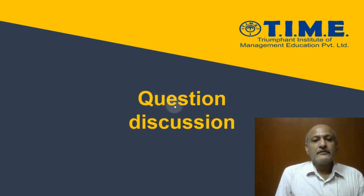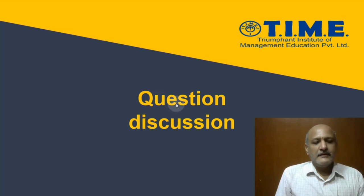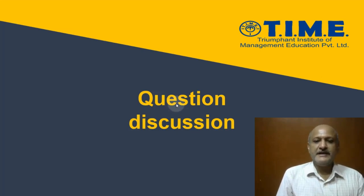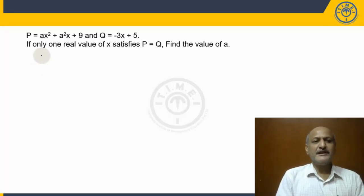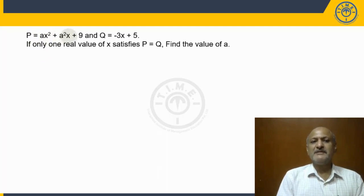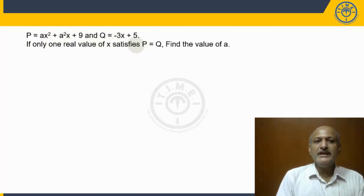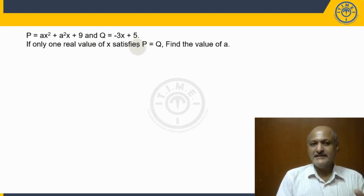Hello everyone, welcome to the time classes. In this series of questions, let's see another question. This is a question in quadratic equations. It reads: p is equal to ax² + a²x + 9, and q is equal to -3x + 5. If only one real value of x satisfies p = q, find the value for a.